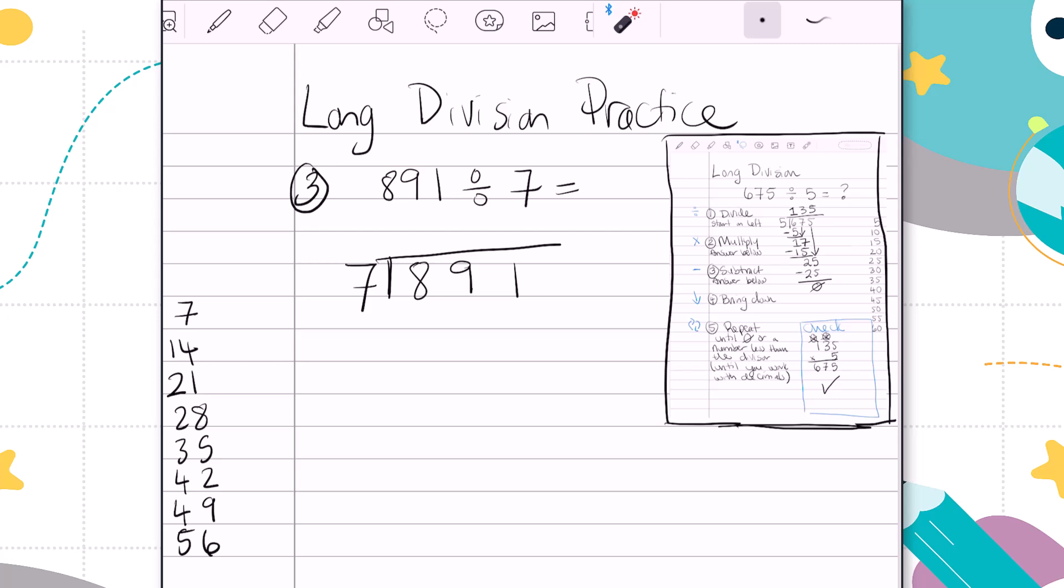My first step is to divide 8 divided by 7. Oh, I can only go one place. 8 divided by 7. One place. 1 times 7 is 7. 8 minus 7 is 1. And bring it on down. 19 is our next number. I'm going to see how many steps it takes to get as close to 19 as I can without going over. That would be 2. 2 steps. And 2 times 7 is 14. Now we'll subtract. 19 minus 14 is 5. And bring down the last digit. 51.